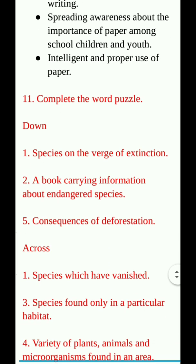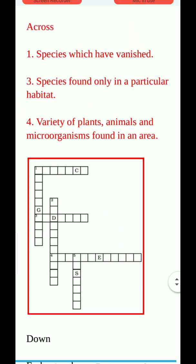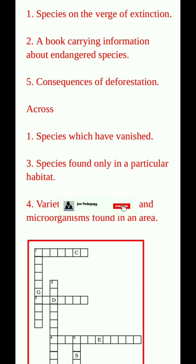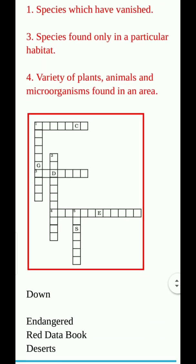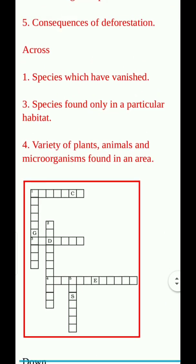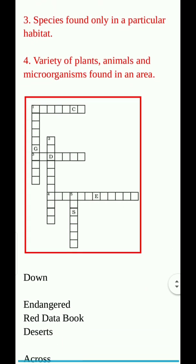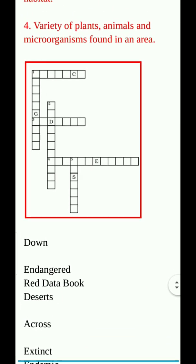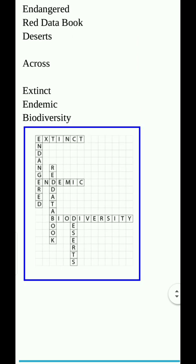Question number 11: Complete the word puzzle. Down: 1. Species on the verge of extinction — answer: Endangered. 2. A book carrying information about endangered species — answer: Red Data Book. 5. Consequences of deforestation. Across: 1. Species which have vanished — answer: Extinct. 3. Species found only in a particular habitat — answer: Endemic. 4. Variety of plants, animals and microorganisms found in an area — answer: Biodiversity.